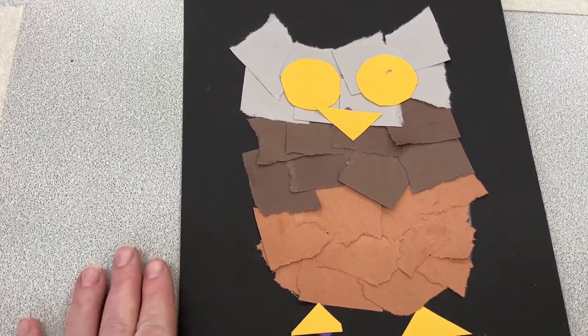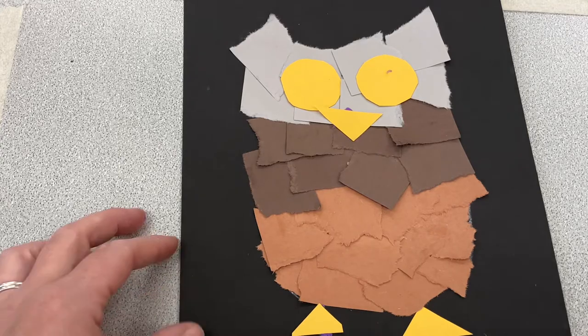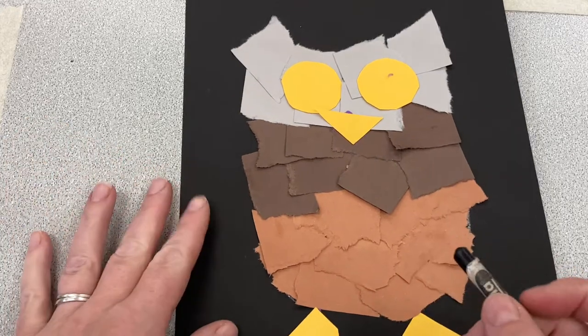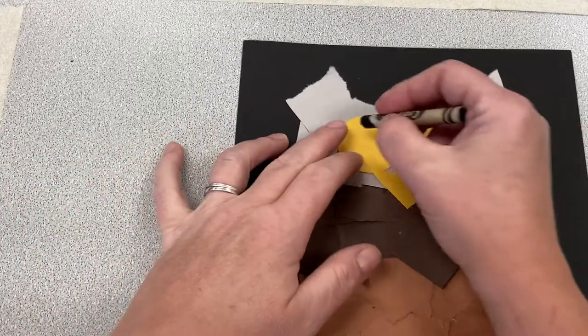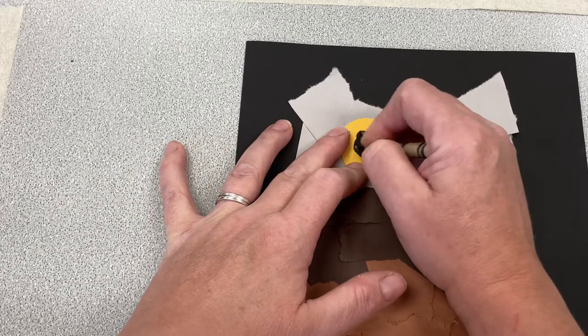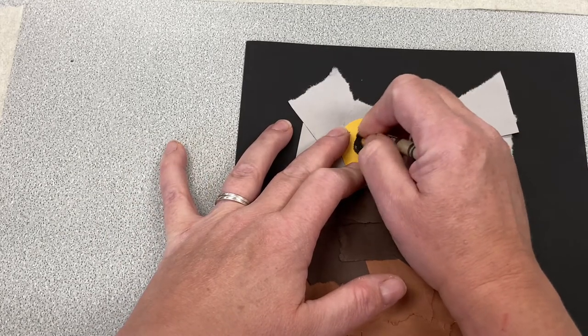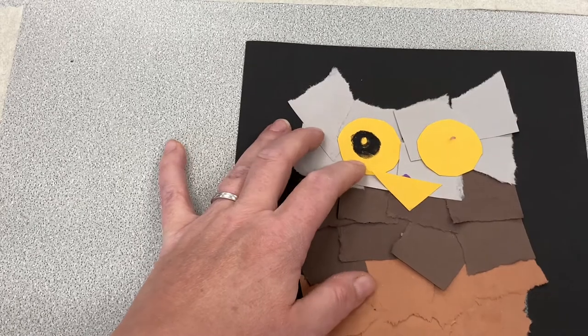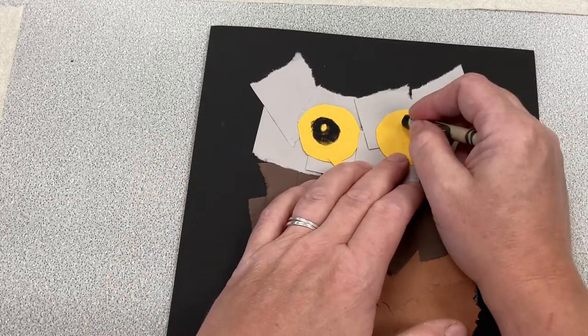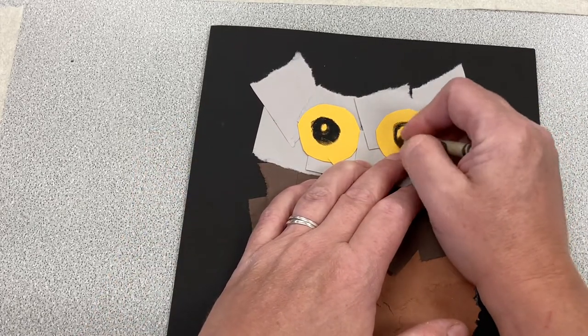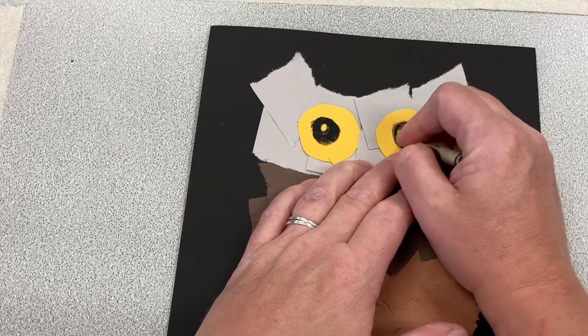That looks great. Time for some details. I'm going to use my black to add some details. Owls have big centers in their eyes. These are the pupils. Owls have really good eyesight, so I'm going to make those nice and big. And I've left a little spot.